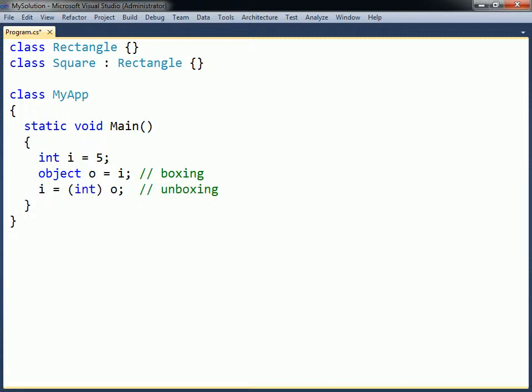The opposite of boxing is unboxing. This converts the boxed value back into a variable of its value type. The unboxing operation must be explicit, since if the object is not unboxed into the correct type a runtime error will occur.